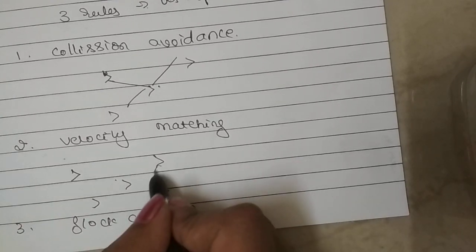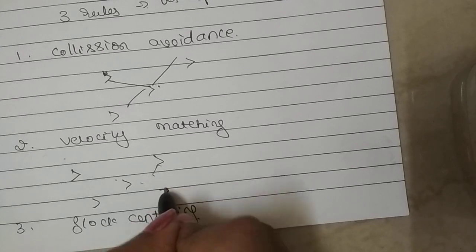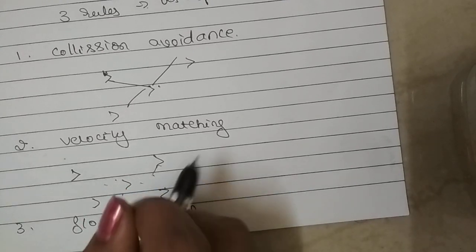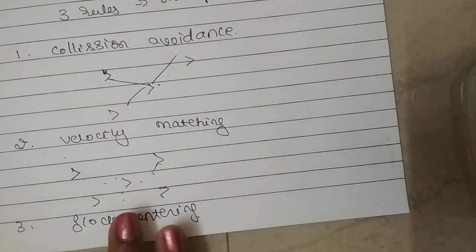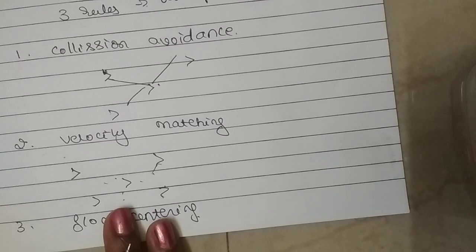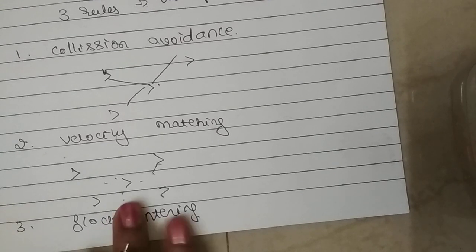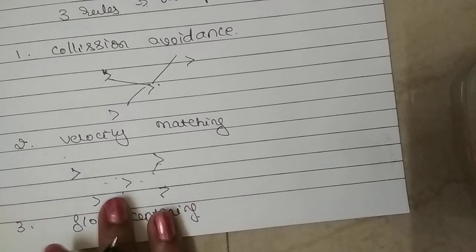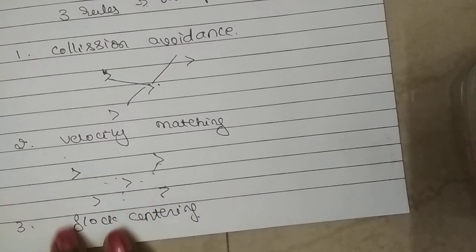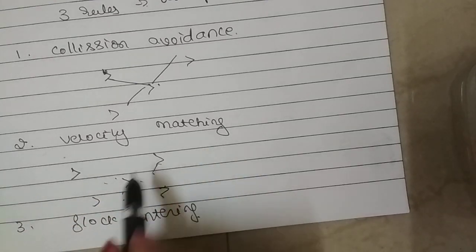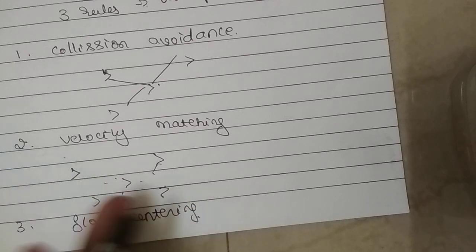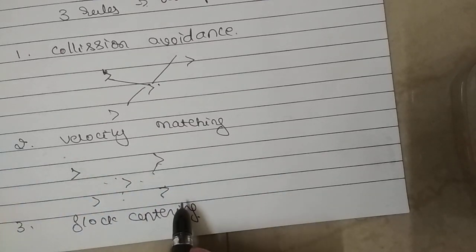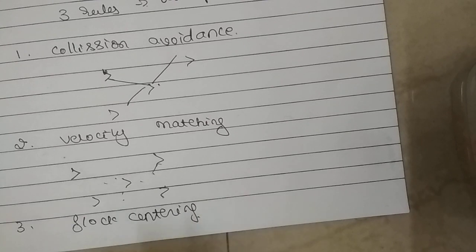The third rule is flock centering — that is, mobility to stay near each bird to avoid any problem. Grouping is the main solution for any problem. If there is a group, it is very difficult to break or do any harm. So avoid distribution — stay near neighbor birds.